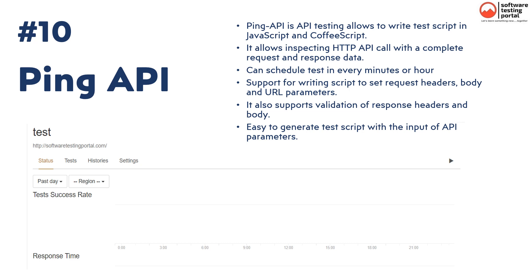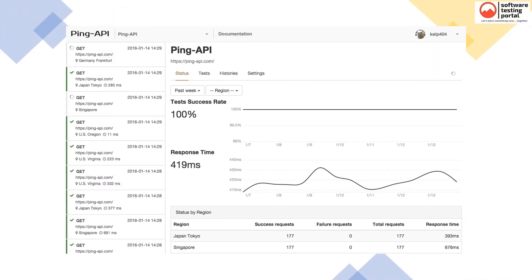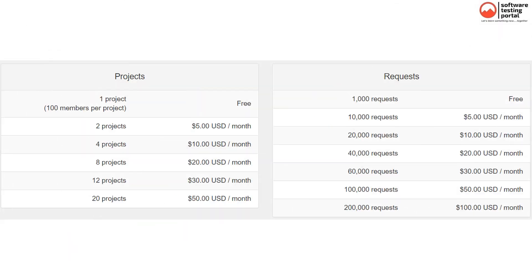Ping API is our next API testing tool. Ping API allows you to write test scripts in JavaScript and CoffeeScript. It allows inspecting HTTP API calls with complete request and response data. You can schedule tests every minute or hour, support for writing scripts to set request headers, body and URL parameters, and it supports validation of response headers and body. It is free for limited projects with varied pricing afterwards. The pricing plan charges per project or requests sent.